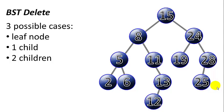And the binary search tree delete operation, there are three possible cases. Either the node you want to delete is a leaf node, it has one child, or it has two children. We'll look at each case separately.